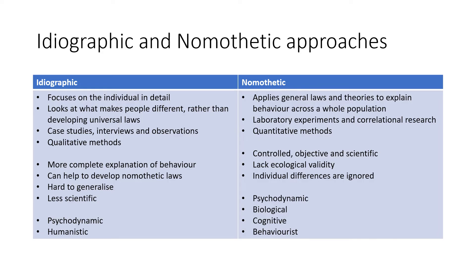The ideographic approach focuses on the individual in detail, looking at what makes people different rather than developing universal laws. It tends to use case studies, interviews, and observations, and provides qualitative data for a more complete explanation of behavior. It can help develop nomothetic laws but is hard to generalize and less scientific. It is supported by the psychodynamic and humanistic approaches. The nomothetic approach applies general laws and theories to explain behavior across a whole population, using laboratory experiments and correlational research to develop quantitative data. It is more controlled, objective, and scientific, but lacks ecological validity and ignores individual differences. It is supported by the psychodynamic, biological, cognitive, and behaviorist approaches.